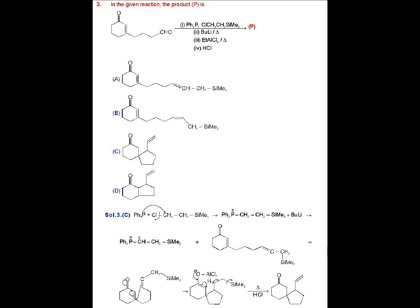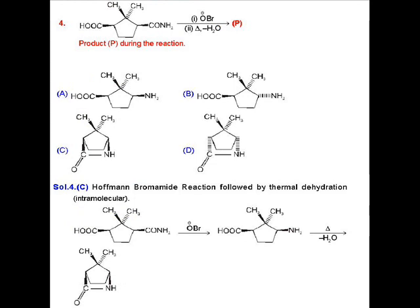Question number 4, MCQ. In step 1, we are conducting Hoffmann bromamide reaction in which the amide group is converted into NH2 group and the geometry of the system remains the same. In the second step, we are heating the resulting product.